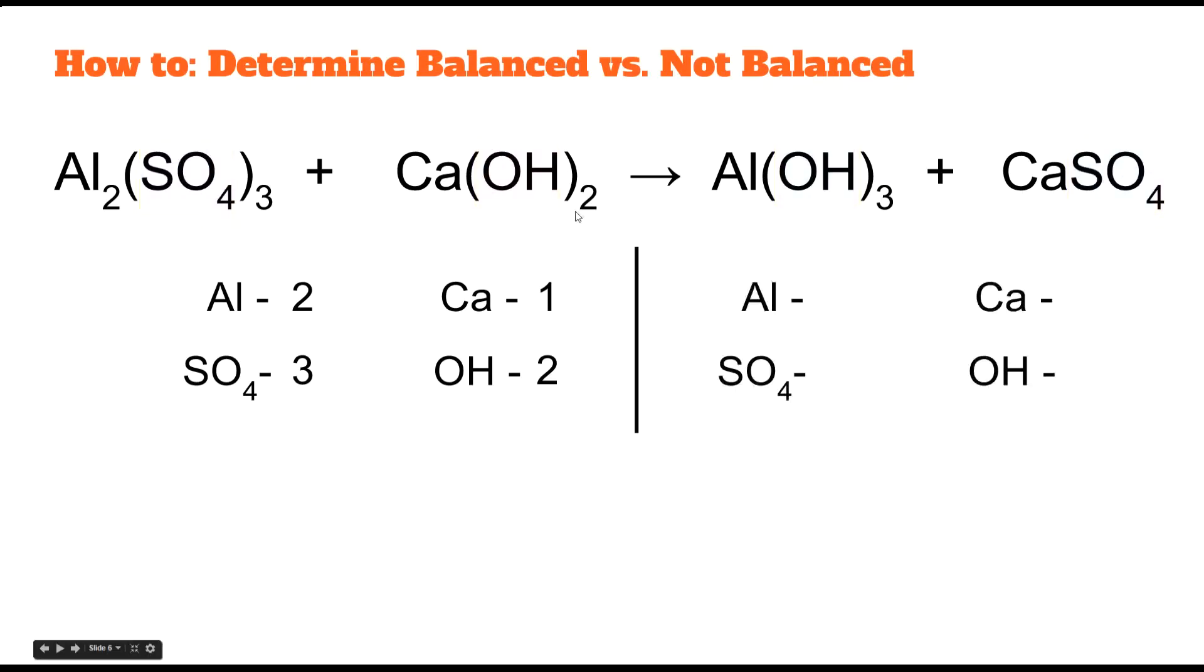Count atoms on the product side now. 1 aluminum, 1 sulfate, 1 calcium, 3 hydroxides. So now when we compare our 2 lists, we can see that 2 aluminums to 1 aluminum, not balanced. 1 calcium and 1 calcium, that's fine. 3 sulfates to 1, not balanced. 2 hydroxides to 3 hydroxides, not balanced. So the entire equation is not balanced. It does not follow the law of conservation of matter.